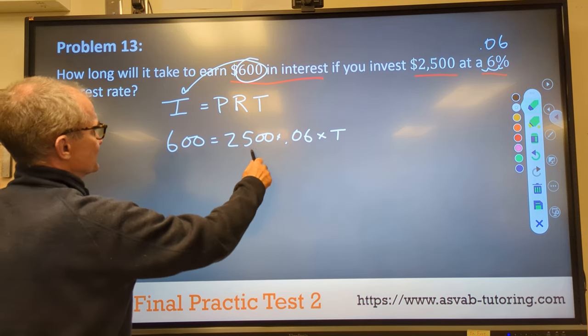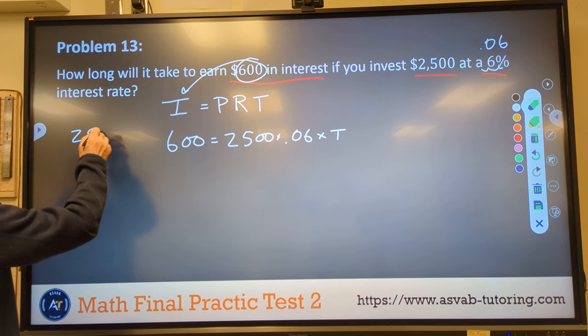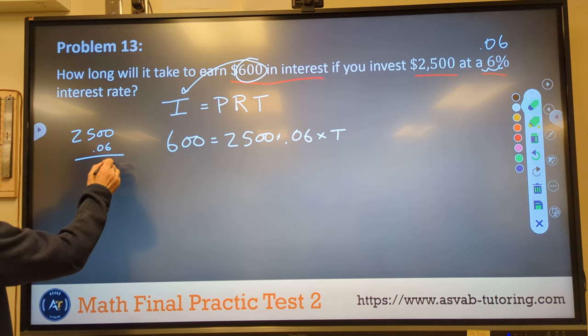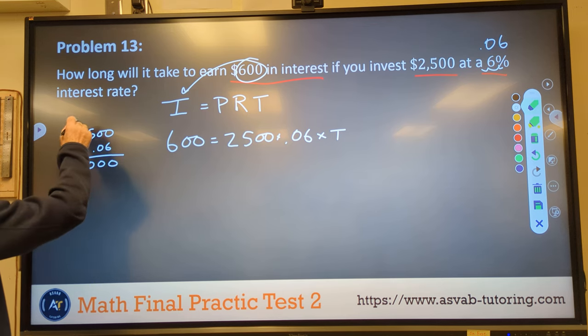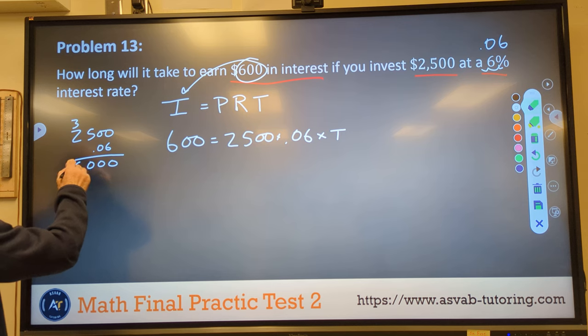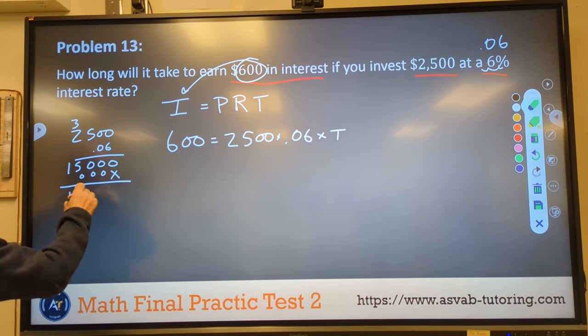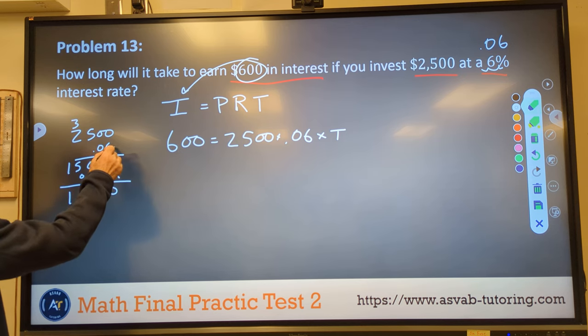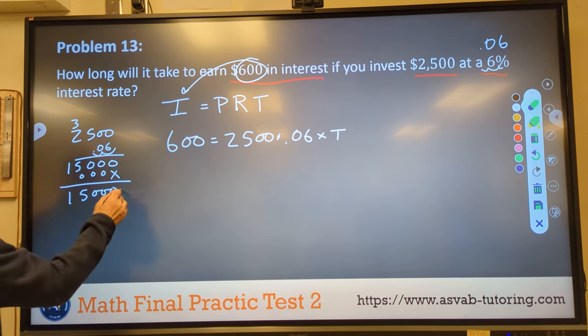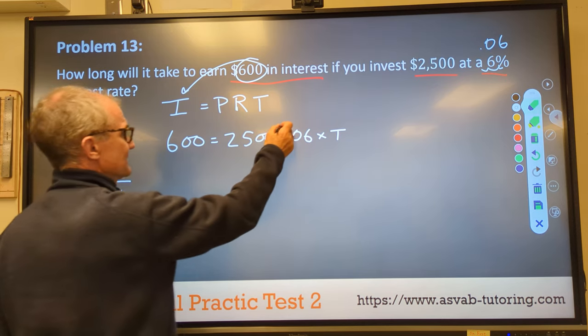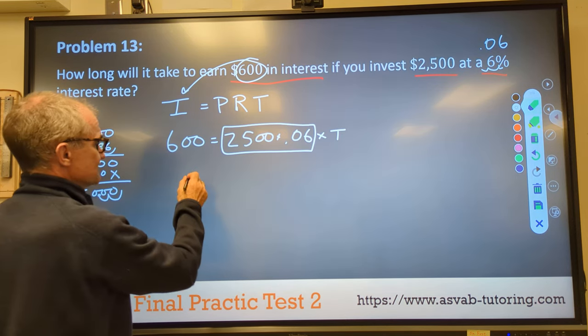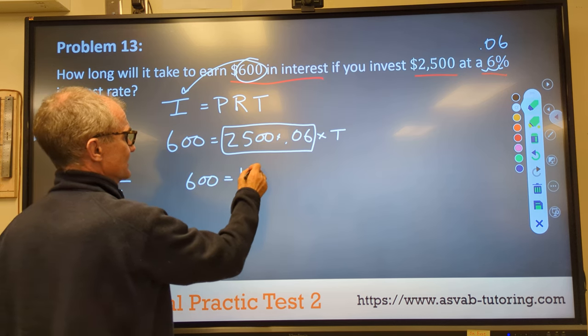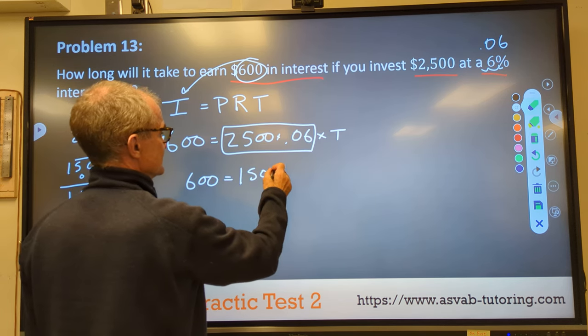First thing I'm going to do is I'm going to multiply these two together. $2,500 times 0.06 is 0, 0, 30. Carry the 3, 12 plus 3, 15 placeholder. These are all zeros. Add that up, and then I got my decimal place over 1, 2. So I go over 1, 2, and I get 150. So this right here is 150. So I have 600 is equal to 150 T, time.